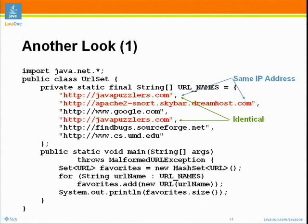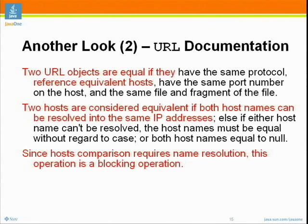Here's the deal: these two URLs — JavaPuzzlers.com and ApacheSnortSkyBarDreamHost.com — may be different, but they resolve to the same IP address. From the perspective of the URL class, they are equal. If you look at the specification, two URL objects are equal if they reference equivalent hosts, and two hosts are considered equivalent if both hostnames can be resolved to the same IP address. Furthermore, since host comparison requires name resolution, checking if two URLs are equal can block. It turns out that the equals method for URL is incompatible with virtual hosting, because when URL was added to the platform around 1993, there wasn't a lot of virtual hosting going on.